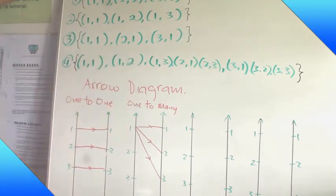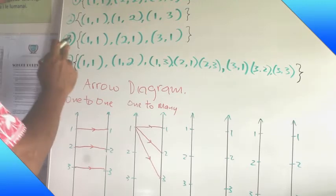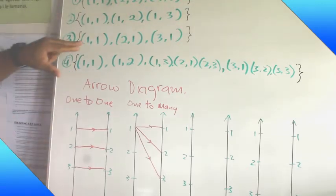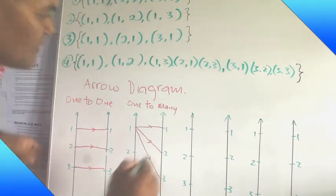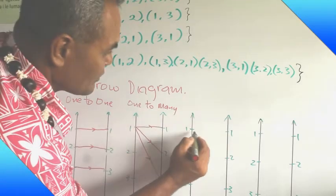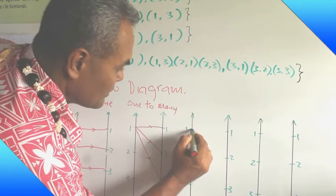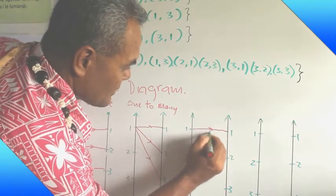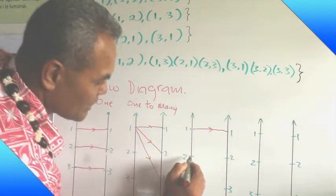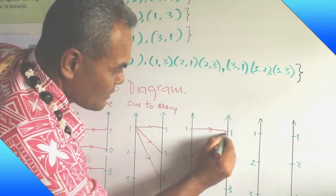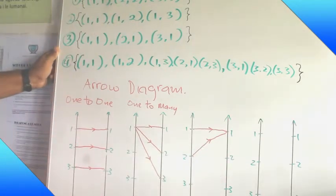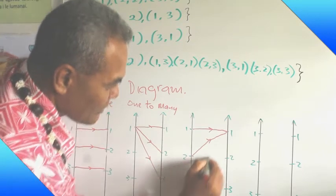Then the third one is the ordered pair, the set of ordered pair: one one, two one, three one. Now you can draw on by using the arrow diagram, one one, next one is two one, and the last one is three one.